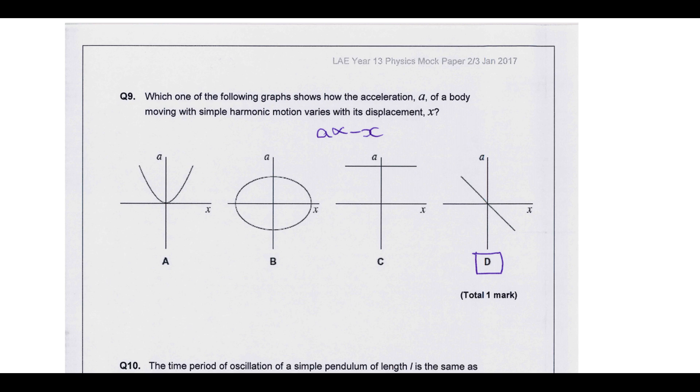Moving on to the next one. Which one of the following graphs shows how the acceleration varies with displacement if it's an SHM? This is the relationship you should know for SHM - that the acceleration is directly proportional to the magnitude of the displacement, but in the opposite direction. That's one that describes this graph right here. It's a straight line relationship with a negative gradient.